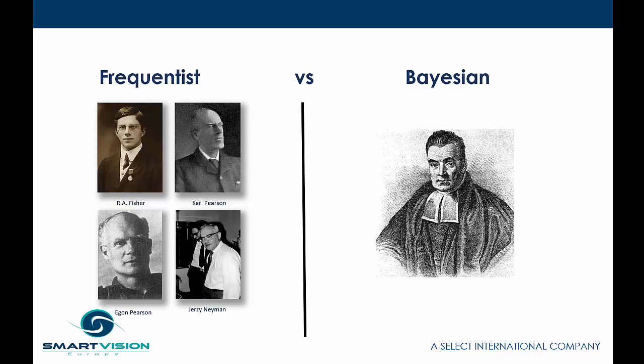At the vanguard of the frequentist approach was Sir Ronald Fisher, often referred to as the father of modern statistics. His contemporary Karl Pearson developed many of the most commonly used statistical techniques, such as chi-squared tests and the Pearson correlation coefficient. Karl Pearson's son Egon Pearson and his collaborator Jerzy Neyman went on to develop concepts like power analysis and confidence intervals.